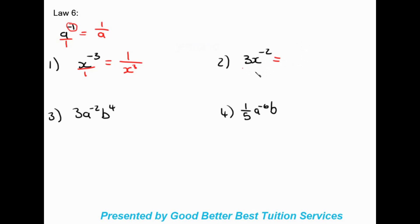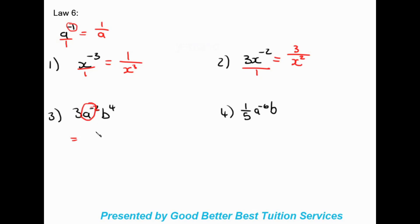Another example: three a to the negative two, b to the power of four. Only the a is affected by the negative exponent, so three and b to the four stay on top and a moves to the bottom. The final answer is three b to the four over a squared.